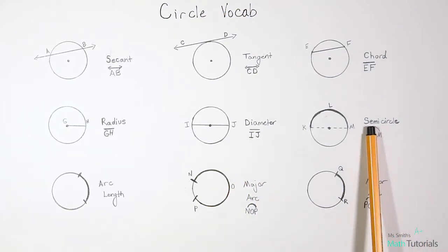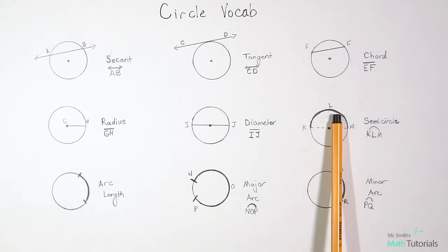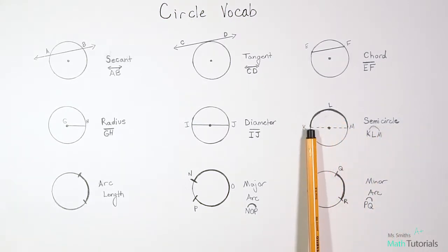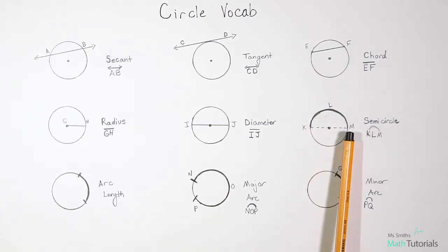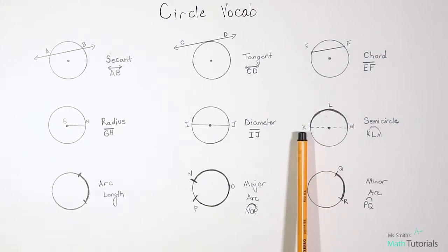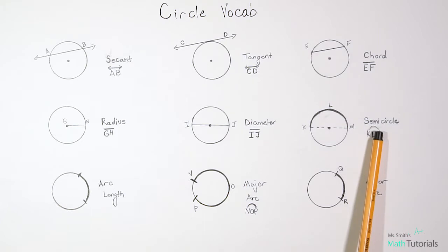The next one is a semicircle, and it's this part that I've kind of darkened here. It's an arc that covers exactly half the circle. That would be called a semicircle. And the way we would write that is, if this was K, L, and M, we'd write it with that little arc above it.